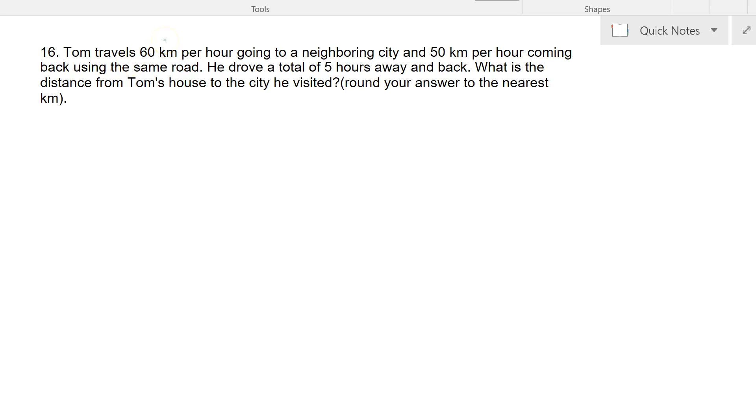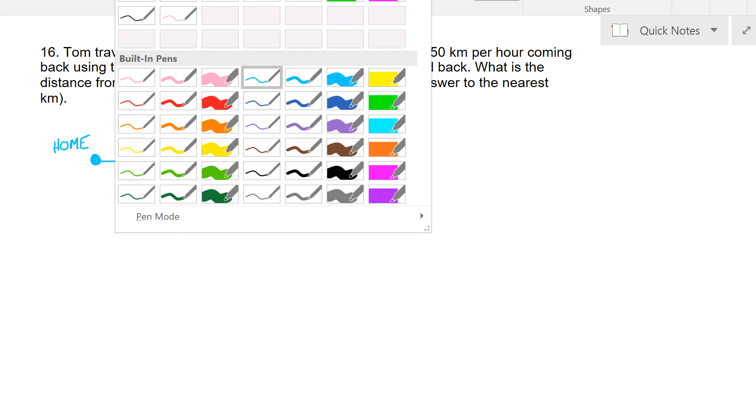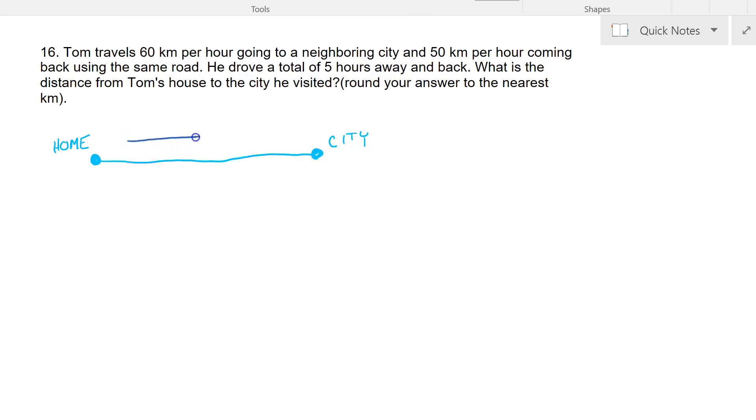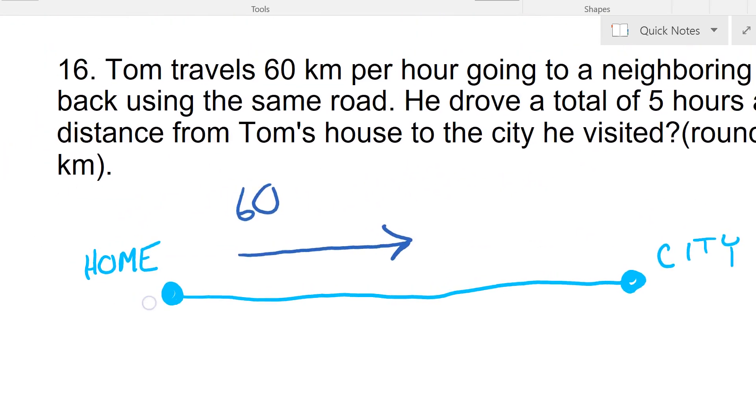We're going to start with a little diagram here. So this is the start, or let's call this Home, and I'm going to travel all the way here to the City. Step one is Tom travels there to there. So he's traveling at 60 kilometers per hour.